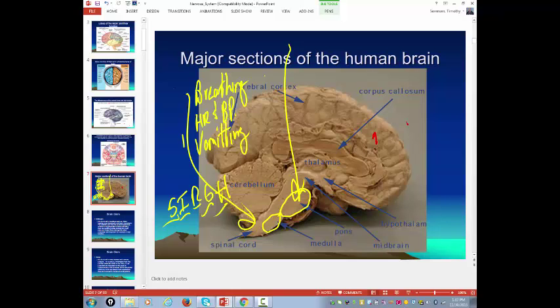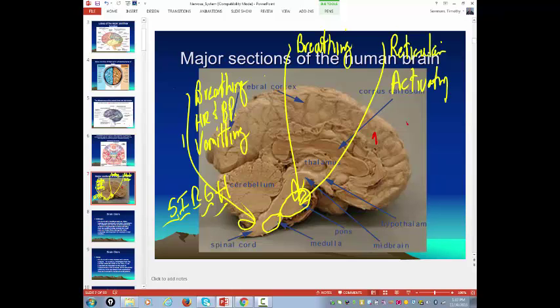Okay, now you got the pons. The pons works with the medulla in terms of controlling breathing. We'll talk more about that in advance. The other thing that the pons has is it houses the reticular activating system. This is the part of the brain that tells you to go night-night and tells you to wake up.